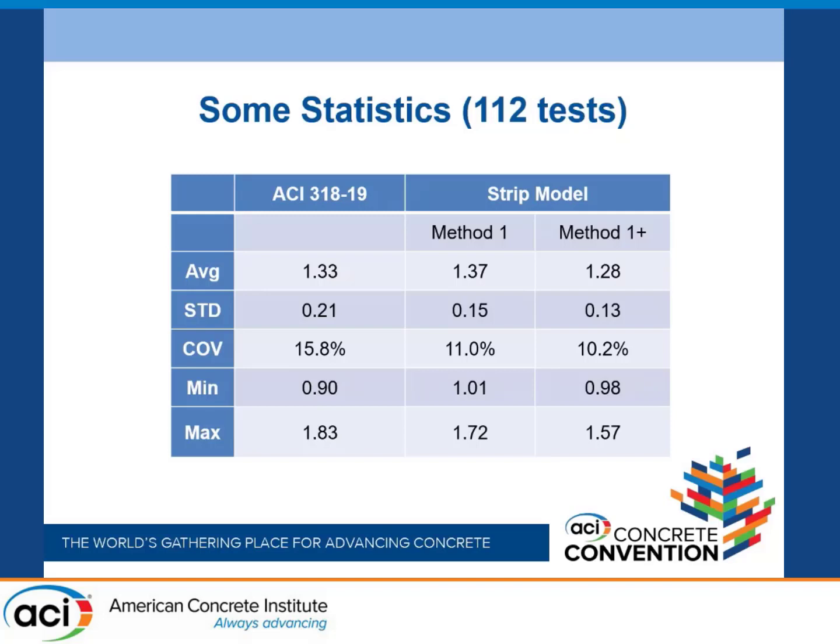So what do we see here? First of all, the code is really good on these tests — 112 tests, footings with realistic loading. This is either reacting against sand or being loaded against springs, but they are good modeling of distributed load, so it's not just a thick two-way slab test. We see a coefficient of variation of 15.8% in shear-related stuff. Why are we even spending any time on it? This is already very good.